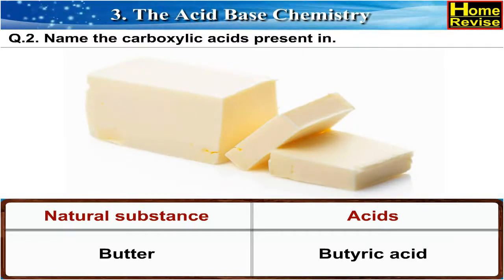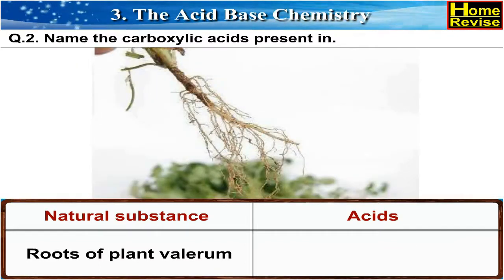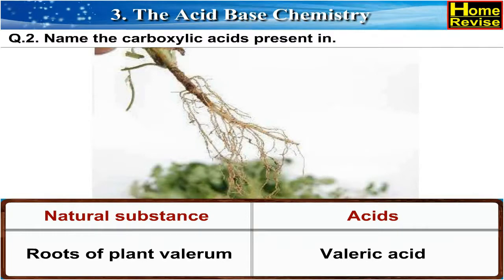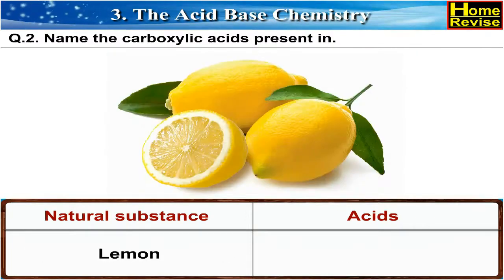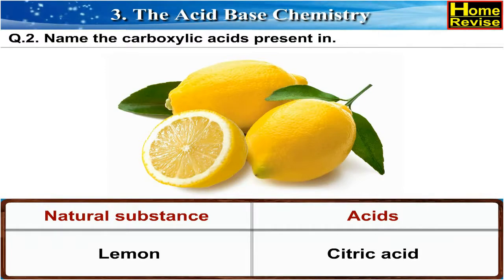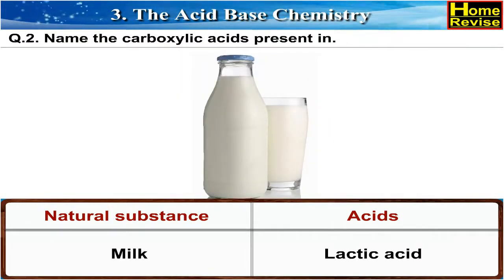Question 11. Roots of plant contain valeric acid. Lemon contains citric acid. Question 12. Milk contains lactic acid. Orange contains citric acid.